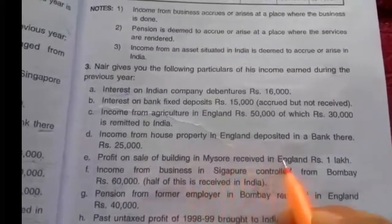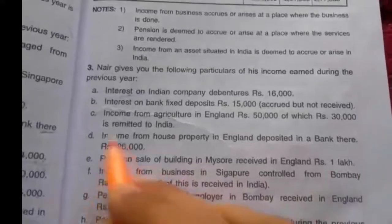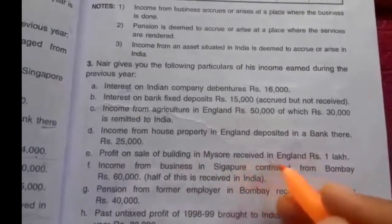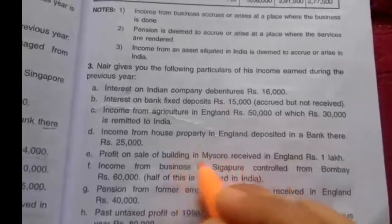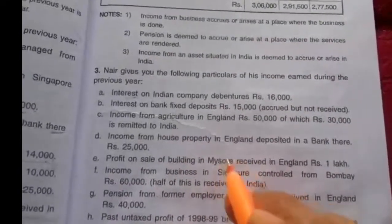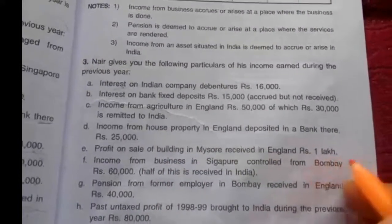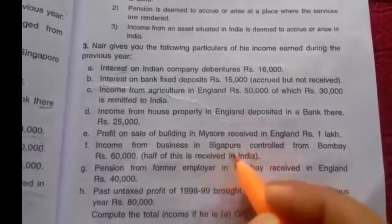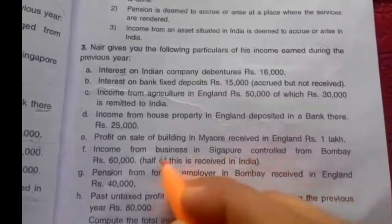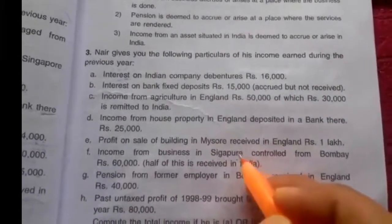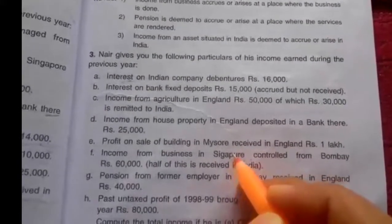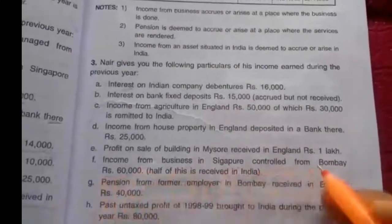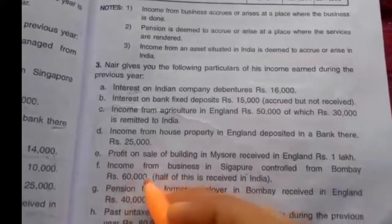Fifth, profit on sale of building in Mysore received in England Rs. 1 lakh. The building is situated in Mysore, so the income is earned in India. It is therefore taxable in the hands of all three cases. Sixth, income from business in Singapore controlled from Bombay Rs. 60,000 — Rs. 60,000 is taxable in the hands of ordinarily resident.